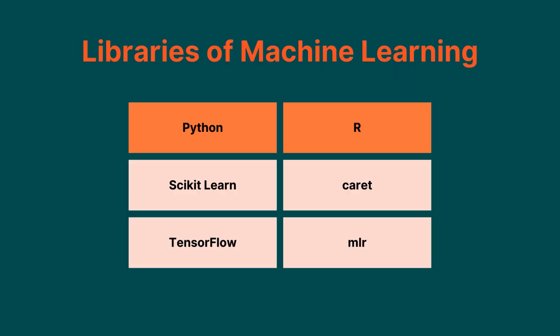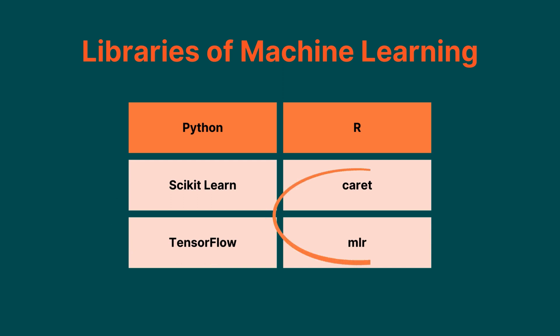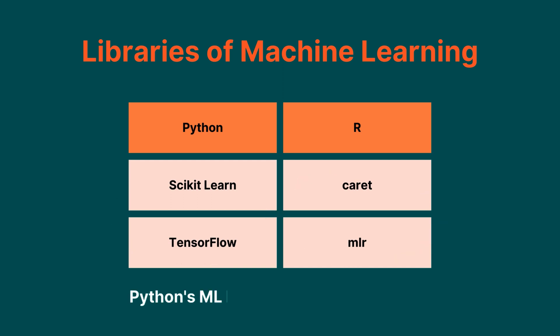In terms of machine learning, both Python and R have a wide range of libraries, such as scikit-learn and TensorFlow for Python, and caret and mlr for R. However, Python's machine learning libraries are generally more mature and have more features than R's libraries.